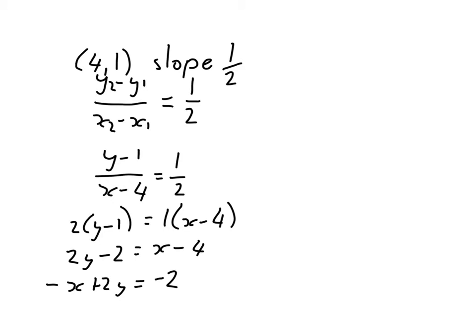And we can change it so we get minus x plus 2y, and we can change that to x minus 2y equals 2. I've just divided everything by minus 1. That's in general form.